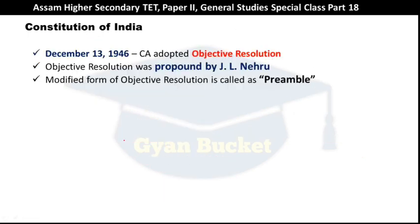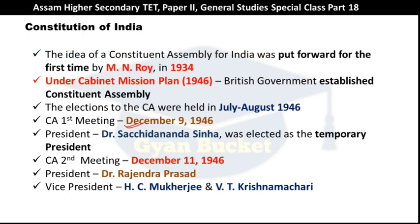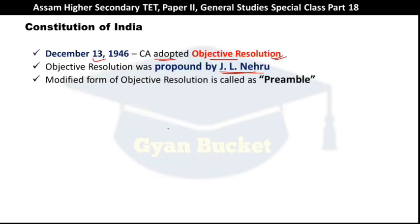On December 13th, 1946, the Objective Resolution was adopted by the Constituent Assembly. The Objective Resolution was presented by Jawaharlal Nehru. The meetings took place on December 9th, December 11th, and December 13th. This Objective Resolution was later modified and became the Preamble — Prashtabona — of our Constitution.